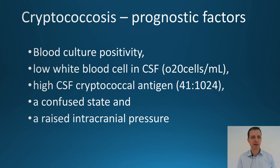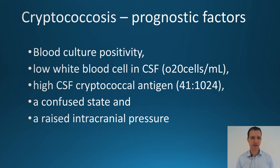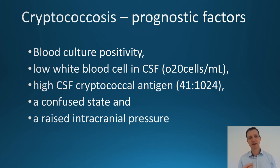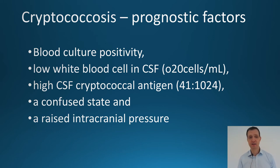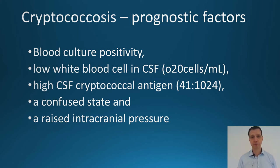What are the prognostic markers? A positive blood culture from the blood is a bad sign. A low white cell count in the CSF is also poor, because it means the immune system is not mounting a response. A high CSF cryptococcal antigen — the higher the number, the more active the disease — is not good. If the patient is generally confused or has raised intracranial pressure, these are all poor prognostic markers.